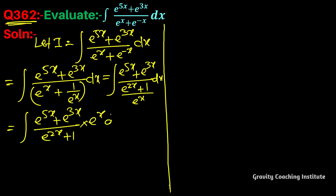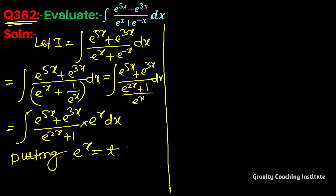Now we put e^x = t. Differentiating with respect to t: the differentiation of e^x is e^x, so e^x dx = dt.